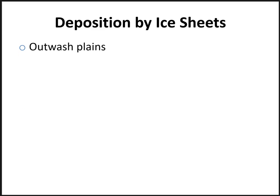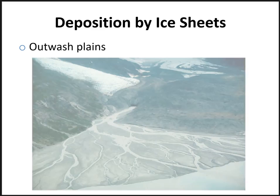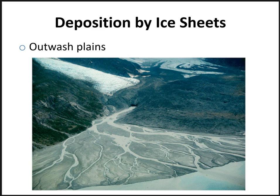An outwash plain forms ahead of the terminal moraine as meltwater from the snout of a glacier deposits sand and other fine sediment. Here is a glacier in Glacier Bay National Park in Alaska, showing a braided outwash plain that forms a delta originating from a subglacial stream. Note that the outwash consists of very fine sediment — no big particles in this glacial outwash plain.